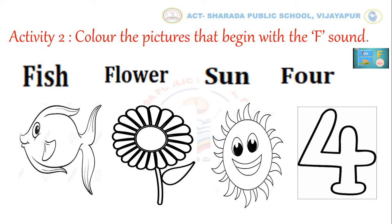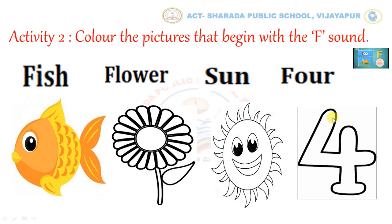Now, in these pictures, can you find out the F sound pictures? Kids, observe all these words carefully. Here we can see F letter in the beginning, and here also we can see F letter in the beginning. But here, we don't see letter F. And here also we can see letter F in the beginning. So children, all these three pictures begin with letter F. Now, color these pictures. In the same way, you have to repeat all these words and color the pictures.